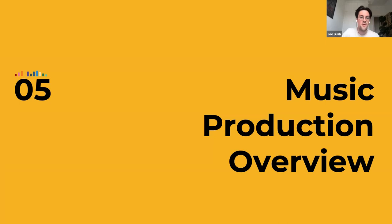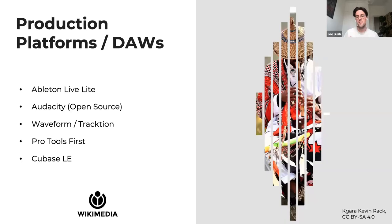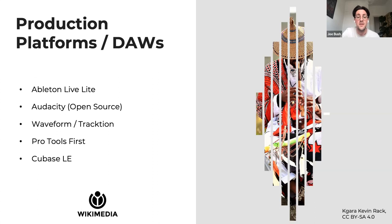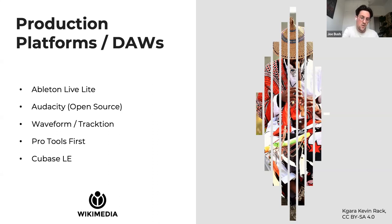In the music production overview, we look at production platforms or DAWs — Digital Audio Workstations — used to manipulate and create sound using computers. Five free options are available: Ableton Live Lite, Audacity (open source), Waveform or Tracktion, Pro Tools First, and Cubase LE. For this presentation, we'll be using Ableton Live Lite for our examples.